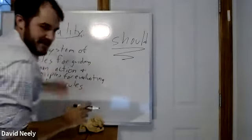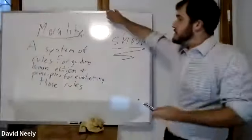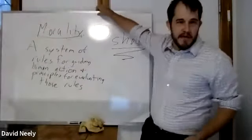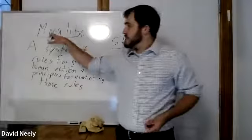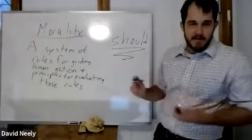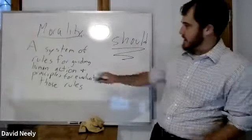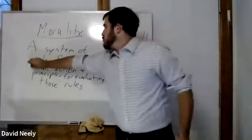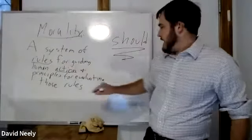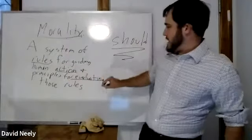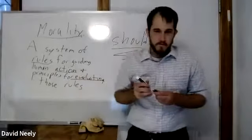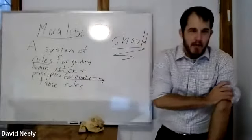Let's unpack this. Each of the examples we gave are cases in which morality comes up. There are a few key terms to highlight: rules, action, and evaluating. When we think about morality — and this is where the word 'should' comes in — it's very much tied in with things to do.